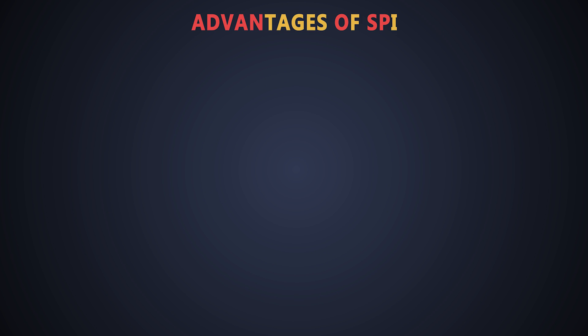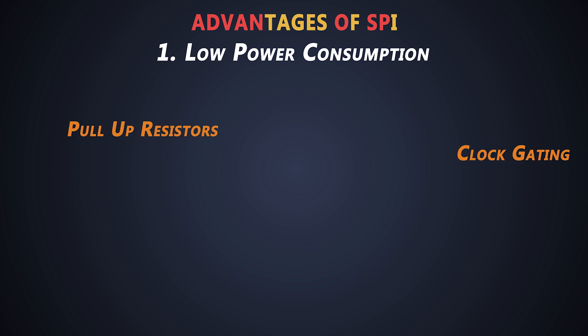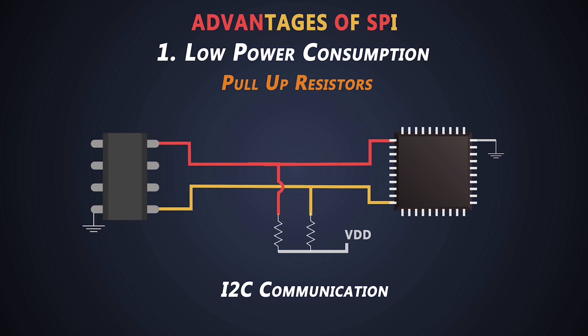Initially we'll see the advantages of SPI communication. It has very low power consumption compared to I2C communication protocol, because there is no need for pull-up resistors and SPI uses clock gating. We know that I2C communication requires pull-up resistors to create the 3.3V or 5V idle state.